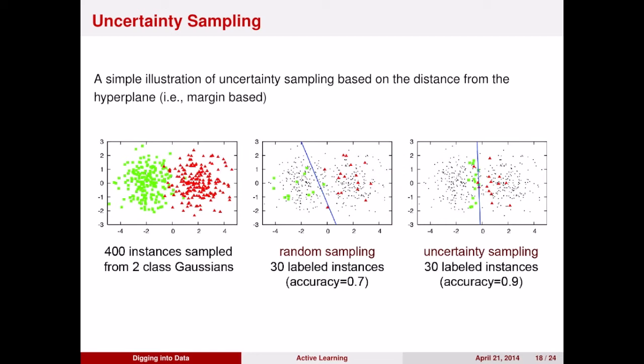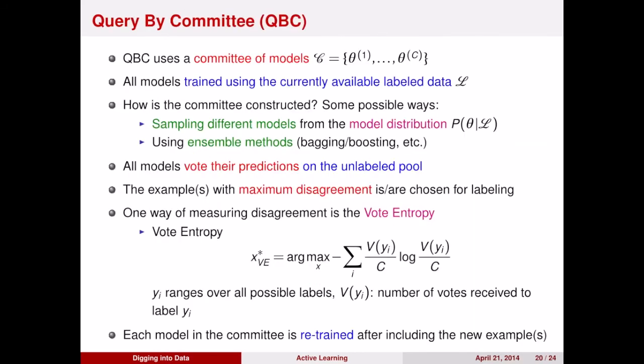Another way of choosing examples for active learning is something called query by committee. So in this case, you have many different classifiers. This is called the committee. Each of these classifiers is making a prediction. We won't go into the details of how you get this committee, but what you can do is you can have each of that committee vote on what it thinks the unlabeled examples should be, and then you choose the examples for which you have the most disagreement. One way that you can do that is to compute the entropy over the votes that the unlabeled examples receives. And then you incorporate those new labeled examples into your model and relearn.